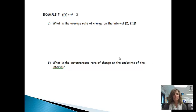All right, let's take a look at an example. Example 7, it says f of t is equal to t squared minus 3. What is the average rate of change on the interval [2, 2.1]? First of all, just to let you know, on this interval, these are both t values.